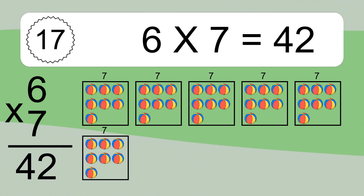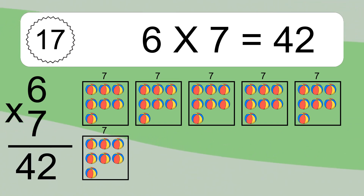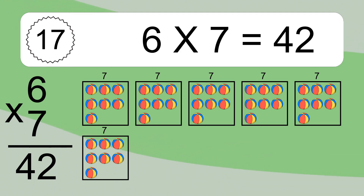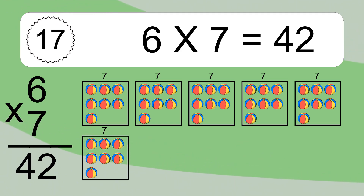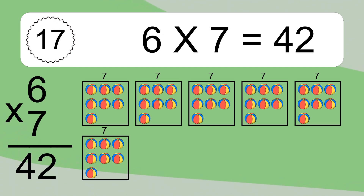We have 6 boxes, and each box has 7 colorful balls inside. If you count all the balls in all the boxes together, you will have 6 times 7 balls. This equals 42 balls.